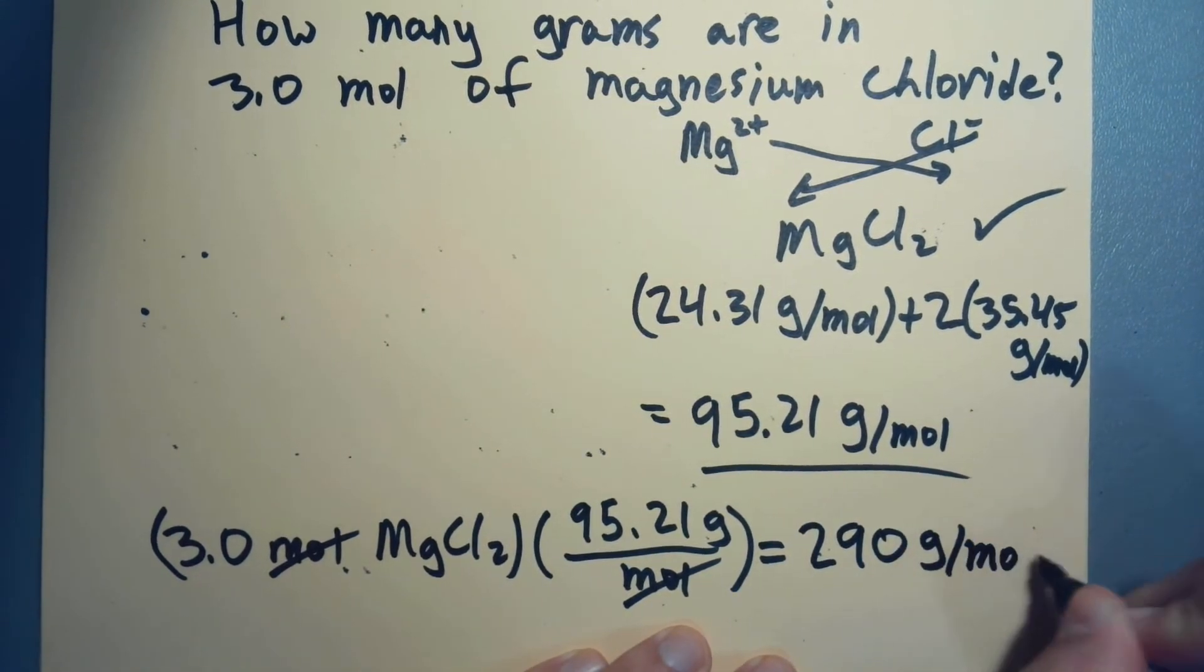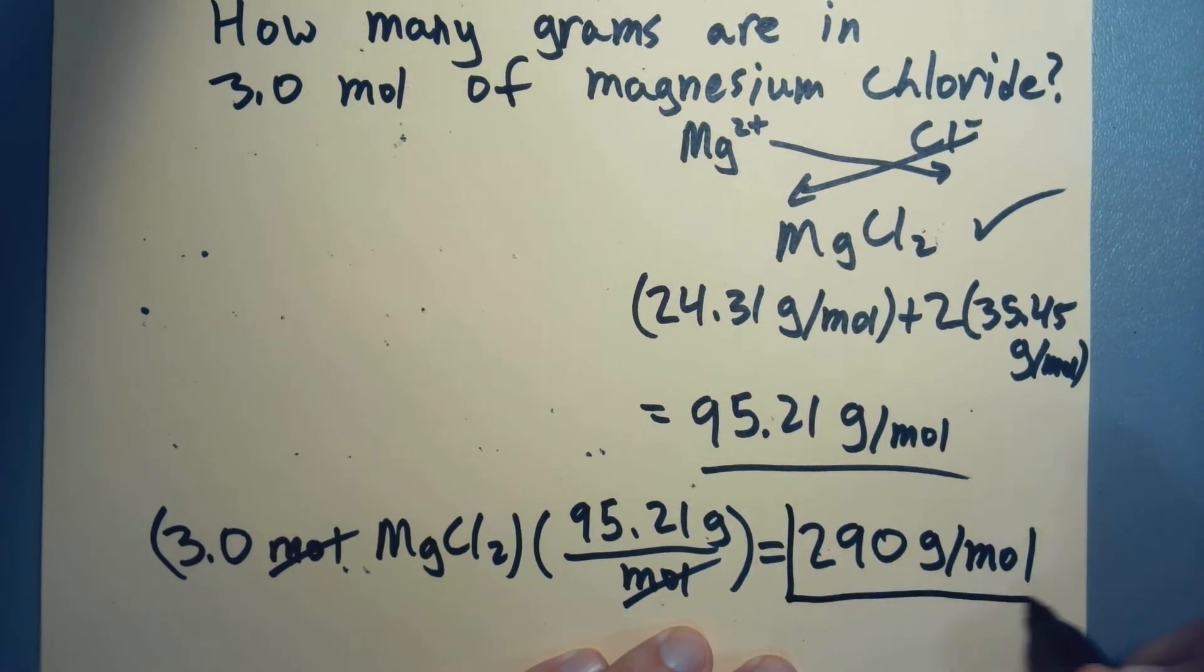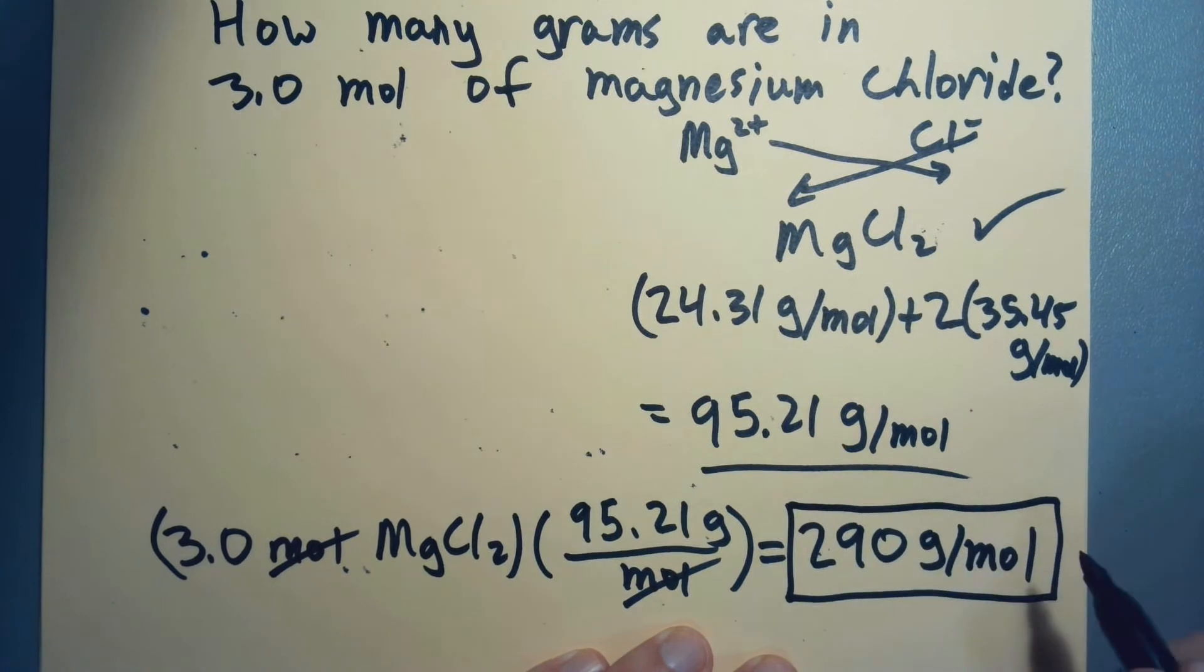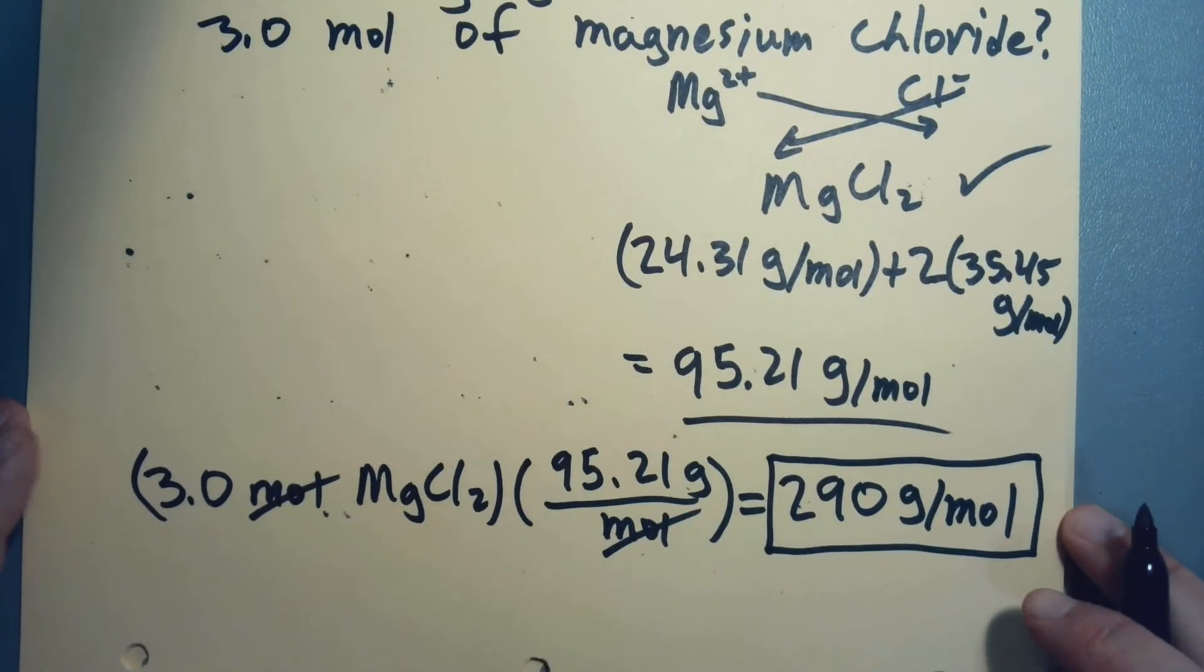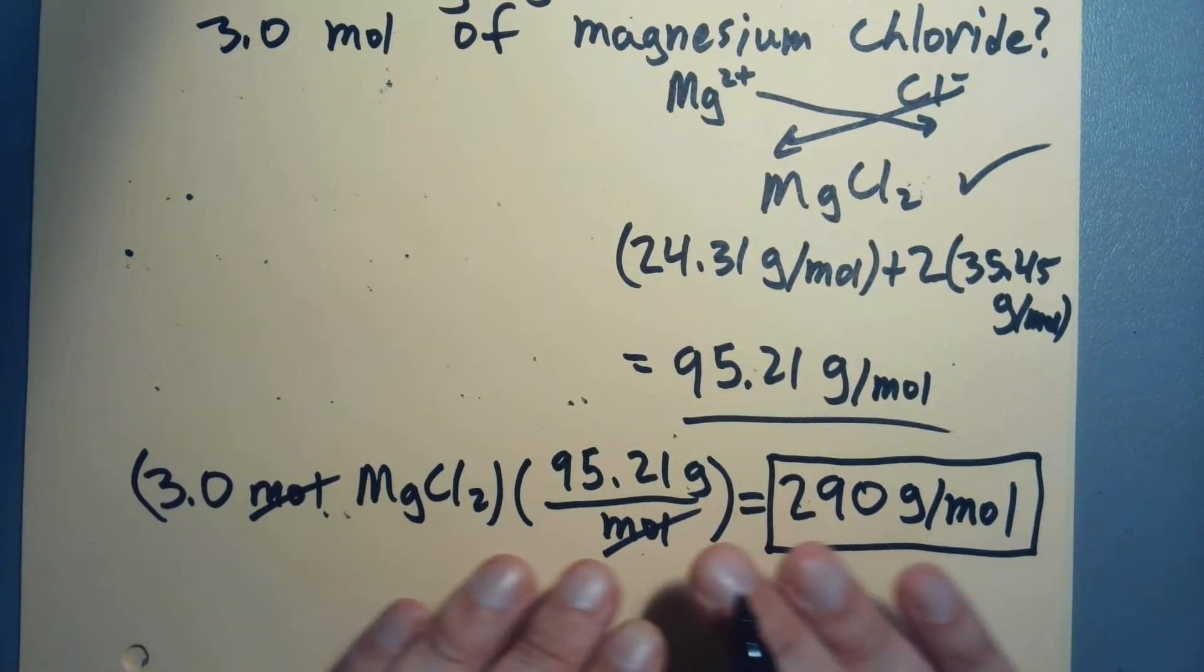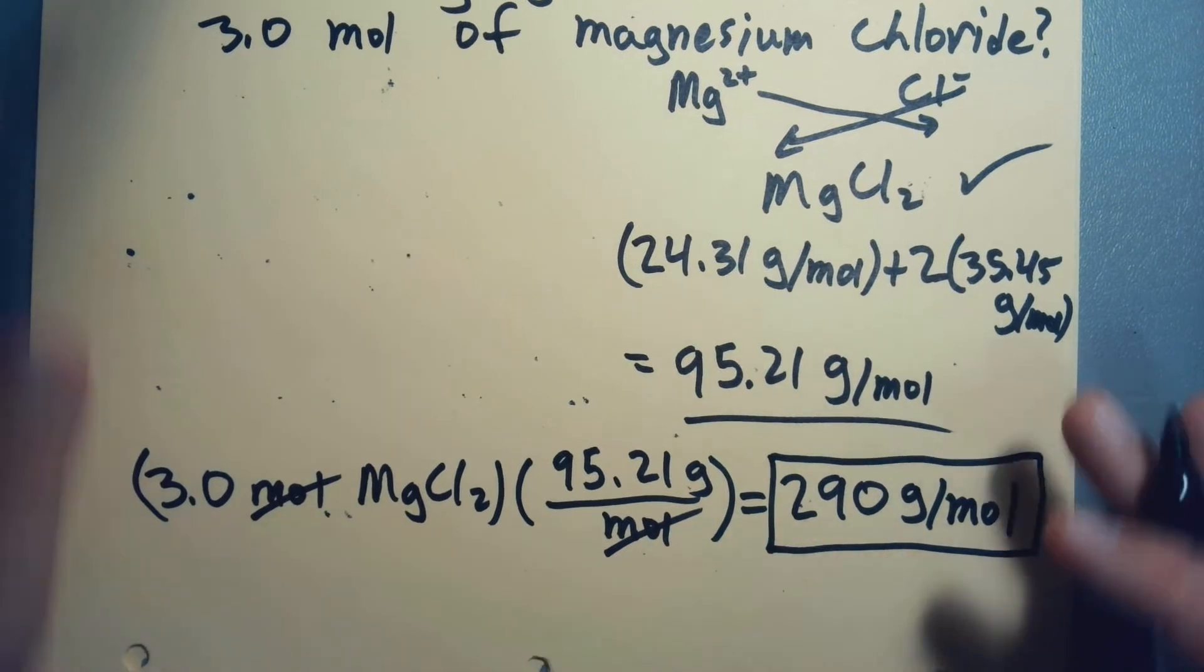This is 290 grams per mole. Hope you guys enjoy hearing my dogs bark - there must be something outside, like a 7-Eleven cup or a wayward balloon. So 290 grams. We can go from moles to grams, we just use our molar mass as it is.